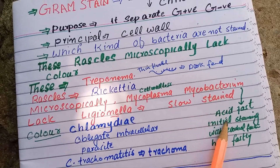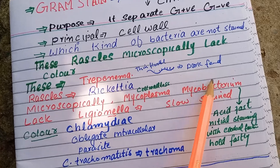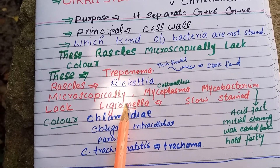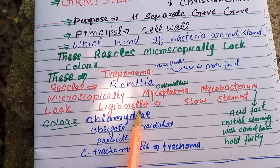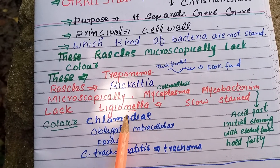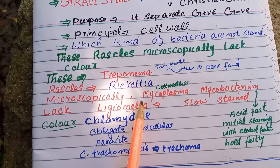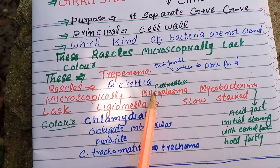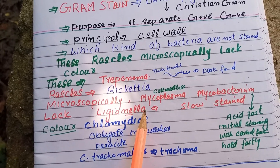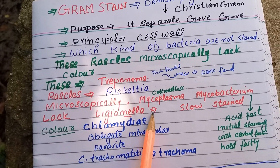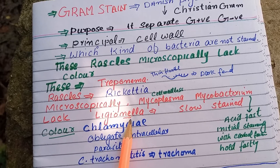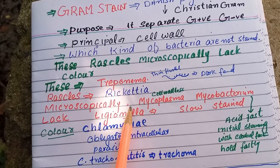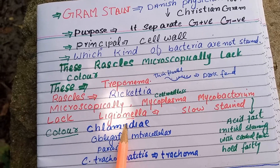Mycobacterium are not Gram stained — they are acid-fast stained. This means that we initially stain them with carbol fuchsin, and after that, if we treat with alcohol, they hold the carbol fuchsin stain strongly. Therefore, they are known as acid-fast bacteria.